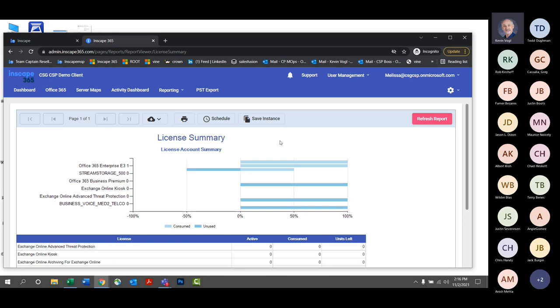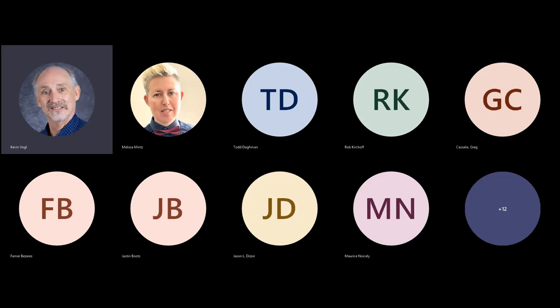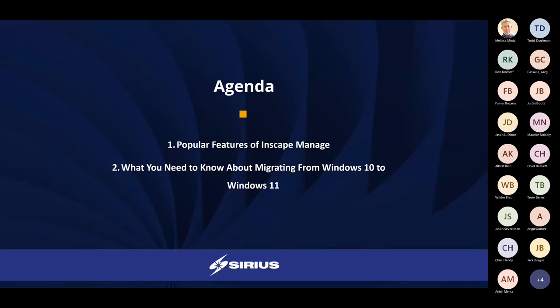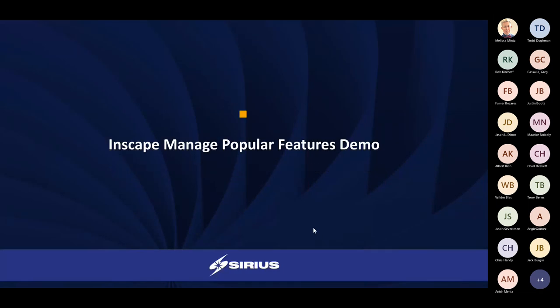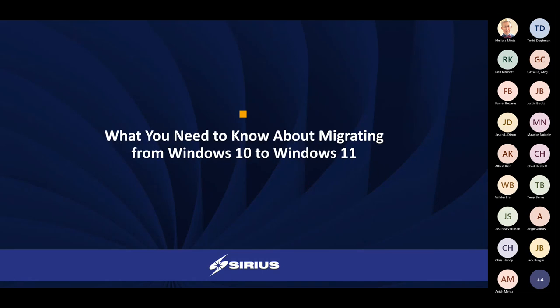Thank you, Melissa, very much. That was very educational. We'll continue on with talking about Windows 11. For those of you that haven't played with Windows 11, it went GA October 5th. This is not a beta or pre-release operating system — this is fully supported. In fact, now even in Windows 365, the cloud PC that Microsoft is offering, you can pick either Windows 10 or Windows 11 for your cloud PC.